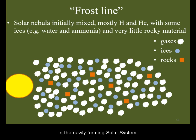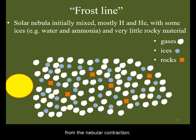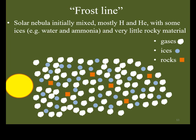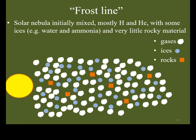In the newly forming solar system, we had the solar nebula — the disk that was formed from the nebular contraction. It was a mixture of material, mostly hydrogen and helium gases, volatiles such as water ice and ammonia collectively referred to as ices, as well as material involving heavier elements that we know mostly as rocks or metal.